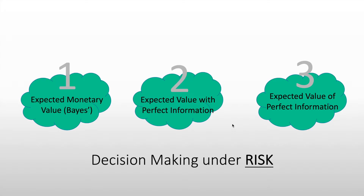Here are the three different computations for decision making under risk. First, expected monetary value (EMV), or the base computation. Then we have the expected value with perfect information (EVWPI) and expected value of perfect information (EVPI). We will go through each one of them.